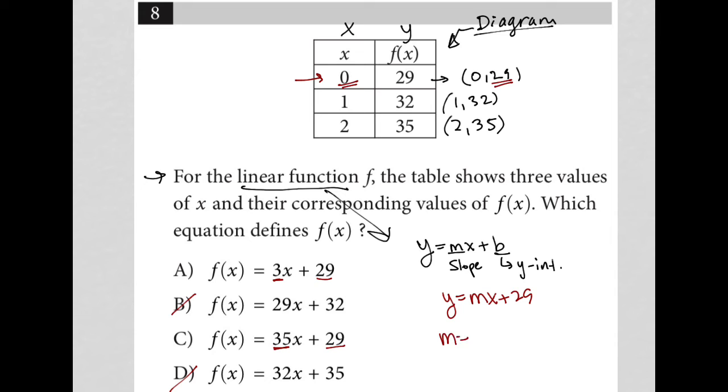So slope m is equal to the change in y. So we just take the difference between two y values and the difference of two x values. And let's do that.